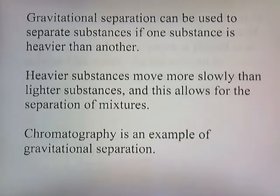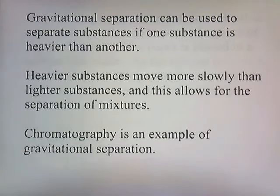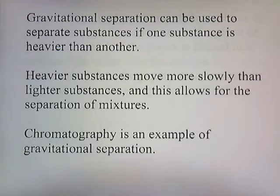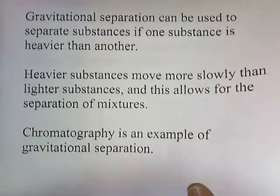Gravitational separation can be used to separate substances if one is heavier than another — heavier substances move more slowly than lighter ones. One way to gravitationally separate the components of blood is to put it in a centrifuge: fill a test tube with blood, spin it, and the heavier molecules settle to the bottom while the lighter molecules float to the top.